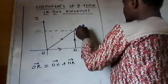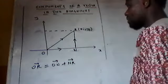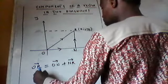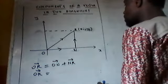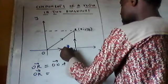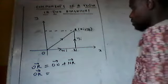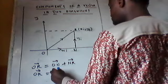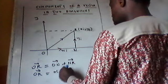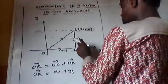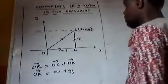So, looking at this coordinate now — the coordinate of R will be (XI, YJ). From here to here it will be XI, and from here to here it will be YJ. So vector OR will now be equal to XI plus YJ. That is the coordinate of R.